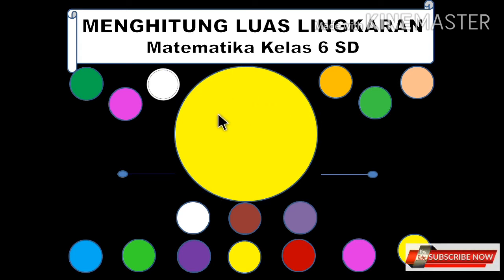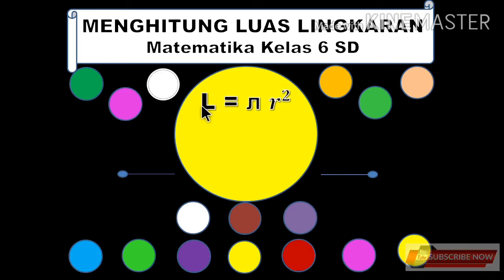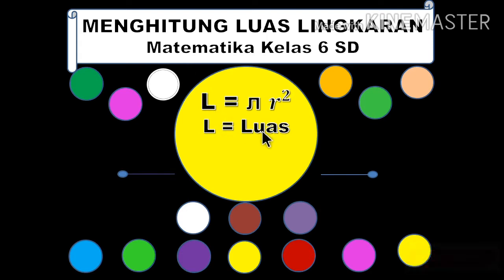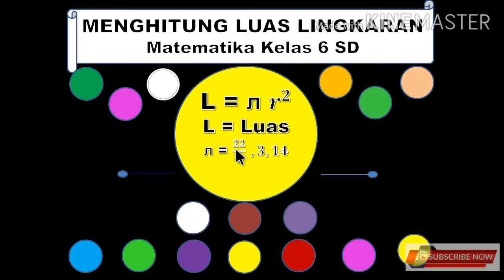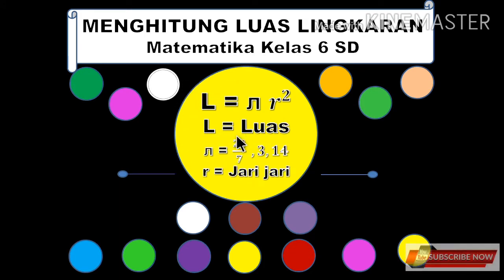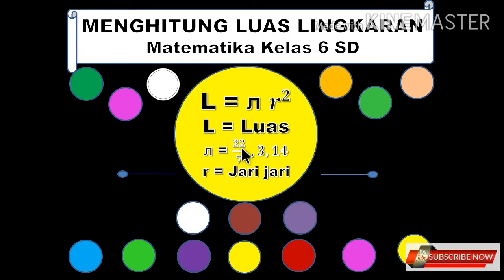Ini adalah lingkaran. Apa itu lingkaran? Luas lingkaran sama dengan π × R². Di mana L adalah luas lingkaran, π bisa 22/7 atau 3,14, dan R adalah jari-jari. Kalau jari-jarinya adalah kelipatan 7, maka π yang digunakan adalah 22/7.